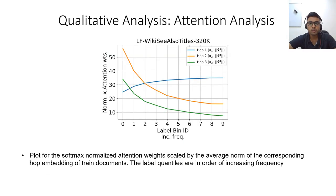And this is what we observe. For instance, this plot shows the softmax normalized retention weight scaled by the average norm of the corresponding hop embedding of trained documents. As you can see, extremely tail labels give more weightage to hops 2 and 3. As we move towards more and more head labels, the weightage of hop 1 which incorporates information just from the immediate neighbourhood increases, whereas that of more global neighbourhood in hop 2 and 3 decreases.